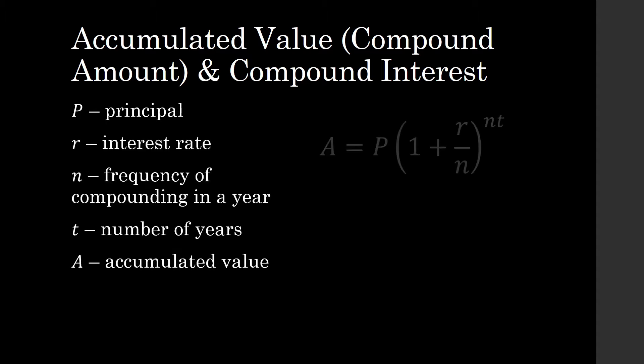Well, let us show the formula. So, the accumulated value A is equal to P times the quantity 1 plus R over N raised to the product of N times T.